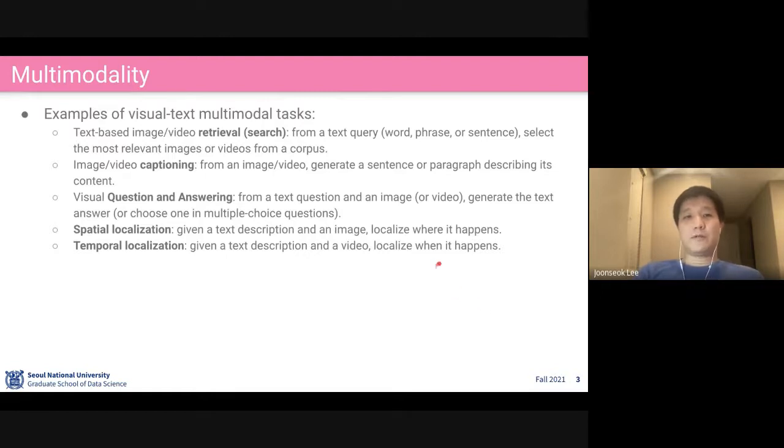We can think of these applications as examples. Text-based image video retrieval, we call this search. When you Google something with some text queries, you're going to find some images. From a text query like a word, phrase, or sentence, the task is selecting the most relevant pictures or images to those queries. That's called image search.